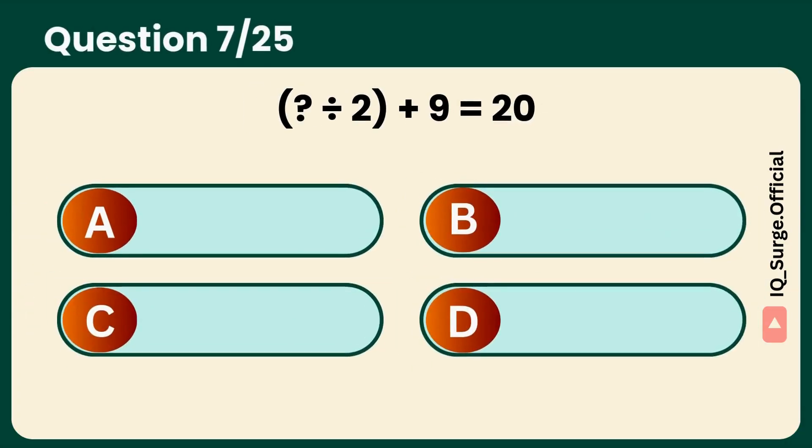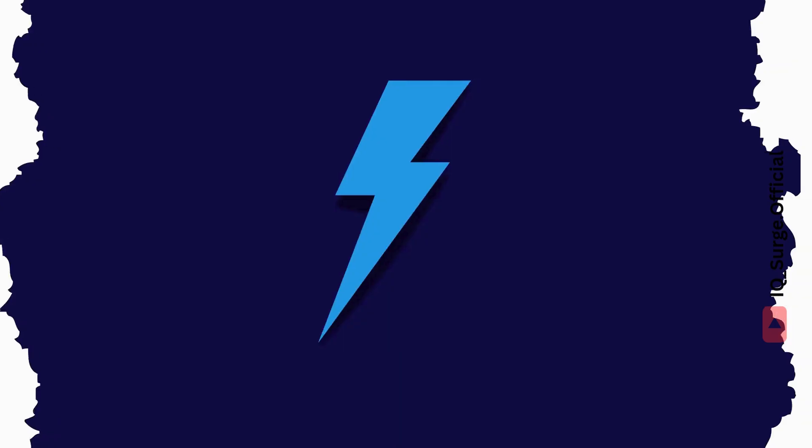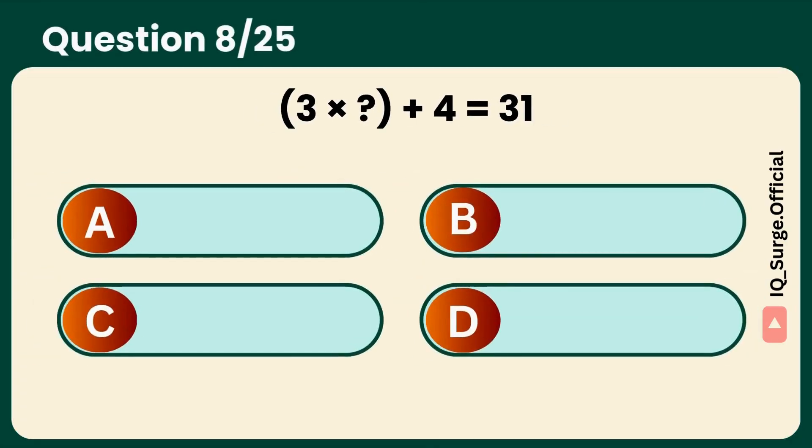Half the number, then add nine. Correct. Twenty-two was the trick. A quick multiplication challenge. Yes, it's nine. Did you get it?